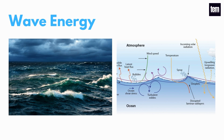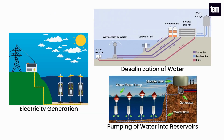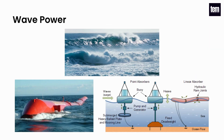Waves are the result of wind moving over the ocean water surface. The wave energy captured is used for all different kinds of useful work, including electricity generation, desalination of water, and pumping of water into reservoirs. Wave power converts the periodic up and down movement of the ocean's waves by placing equipment on the surface of the oceans that captures the energy produced by the wave movement and converts this mechanical energy into electrical power.